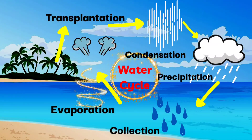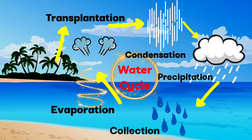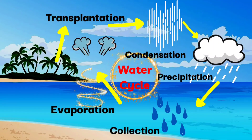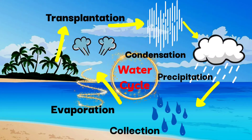Water evaporates from the surface of the earth and forms the clouds. The clouds get cooled and fall again to the surface in the form of rain. This continuous cycle is called the water cycle.